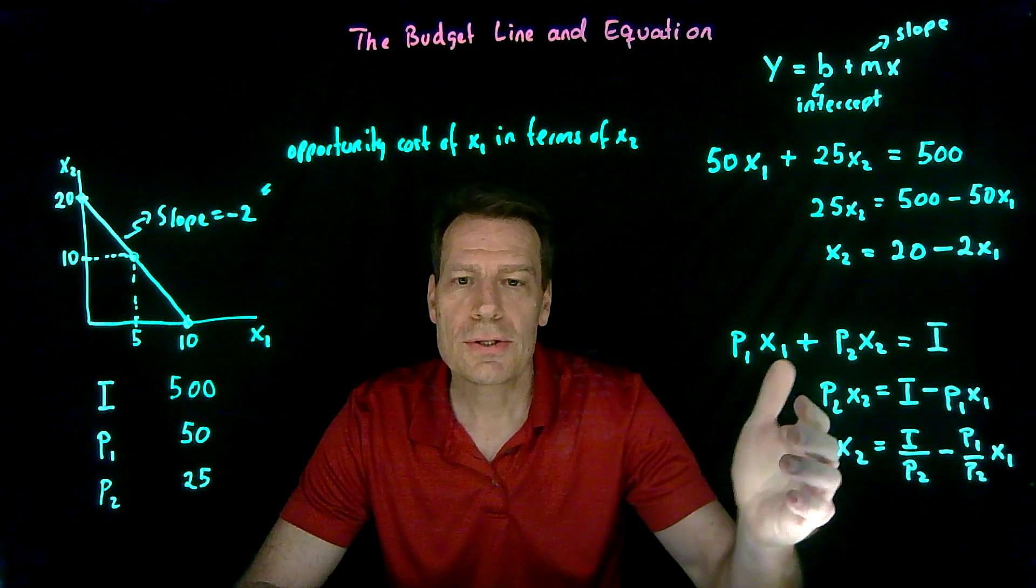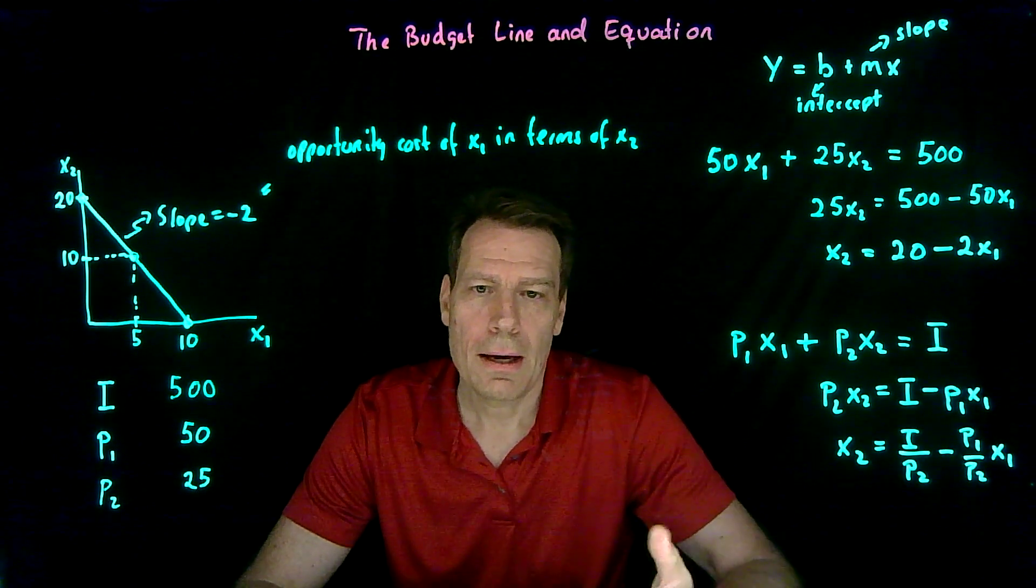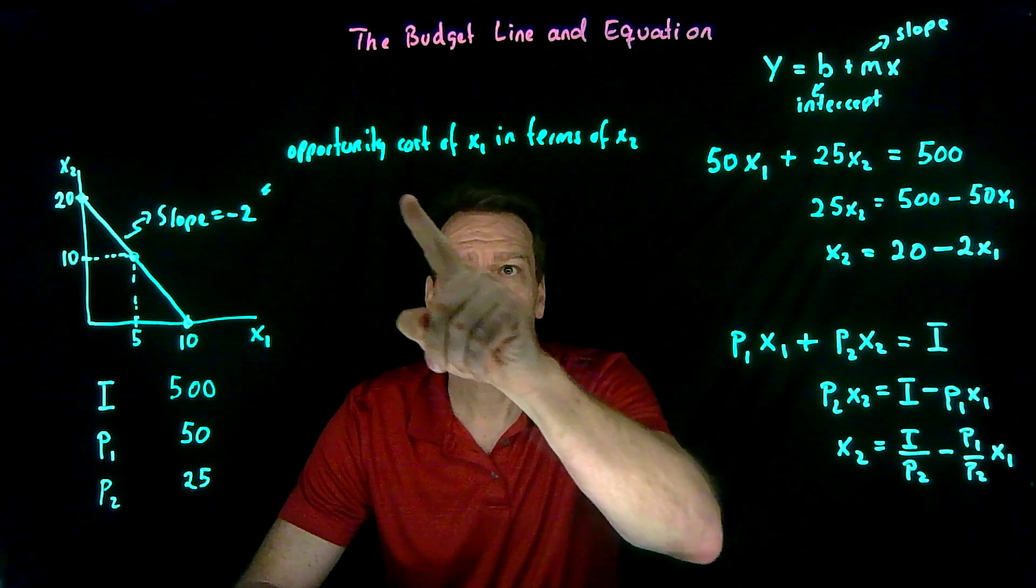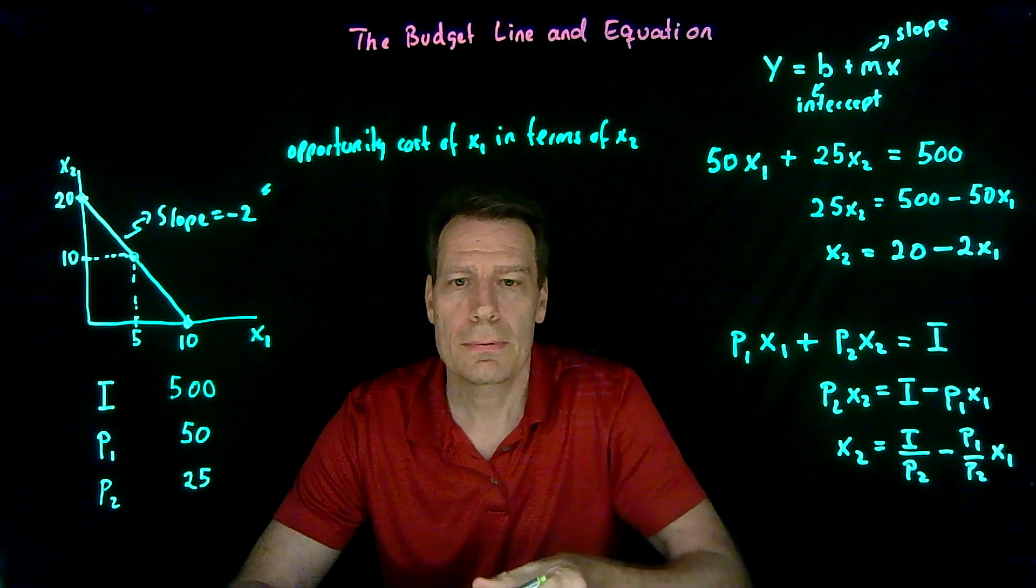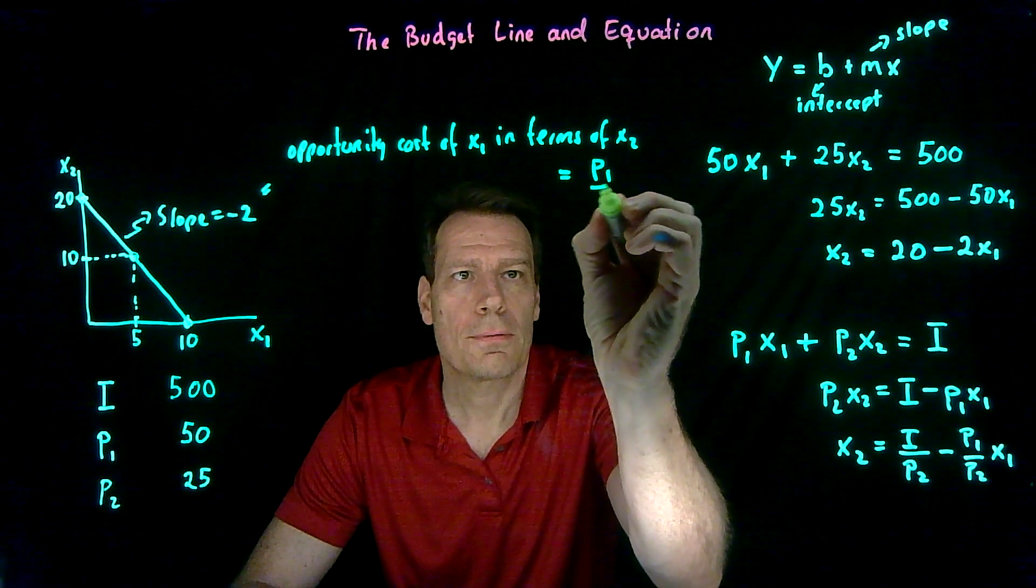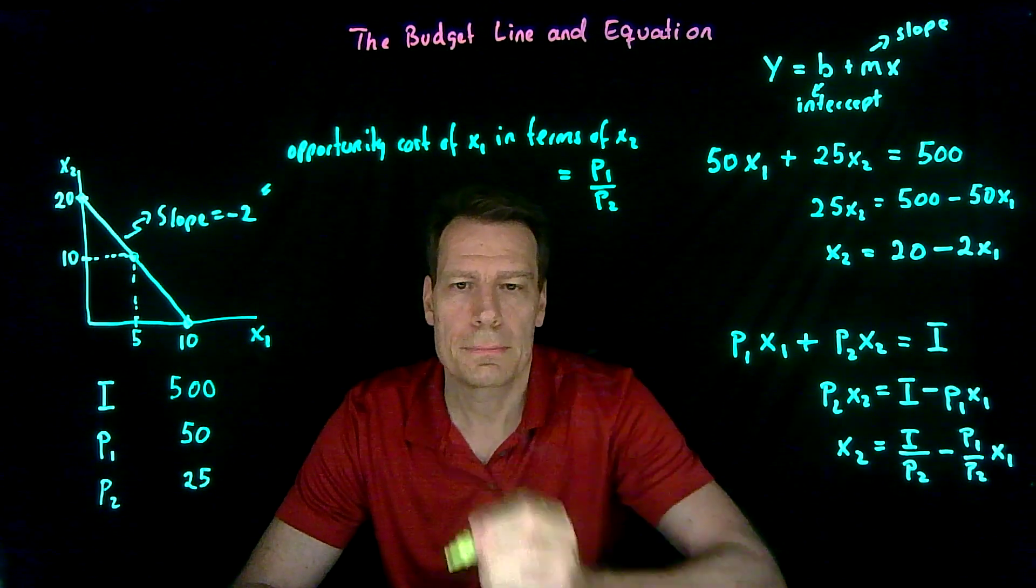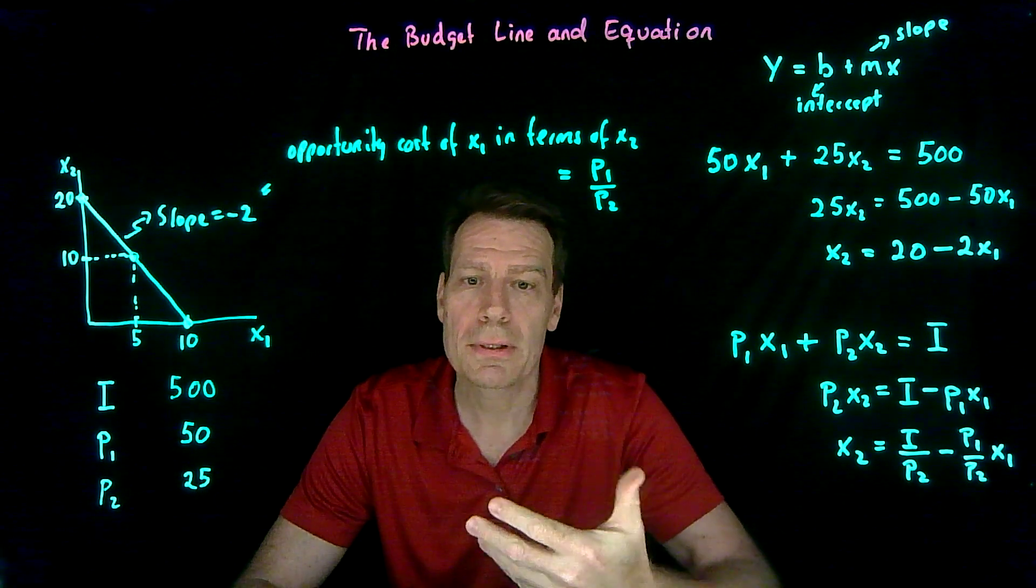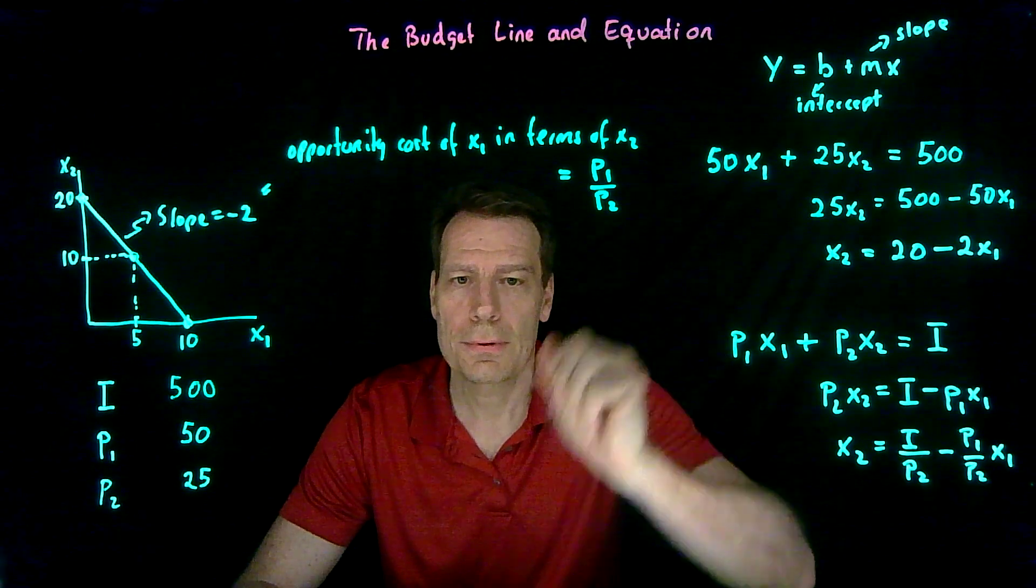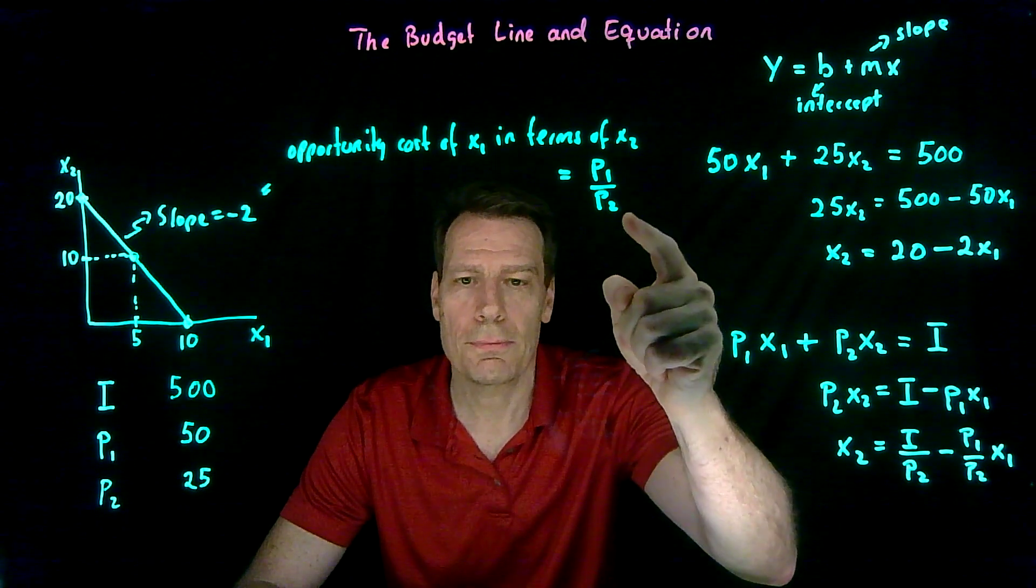So that's how we generally can represent a budget line, and we can now know that the opportunity cost of x1 in terms of x2 is always going to be equal to p1 over p2. Similarly, the opportunity cost of buying x2 will be the inverse, so it will be p2 over p1.